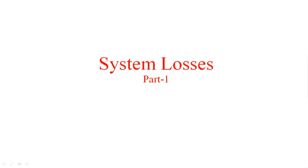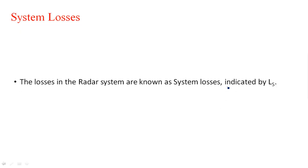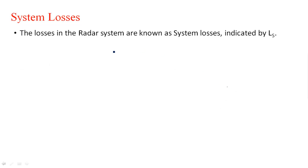In this video, I am going to explain about various losses encountered in the measurement of radar range, or any type of parameter, known as system losses. System losses are nothing but radar system losses — the losses in the radar system are indicated by LS. There are several losses present in the radar system; some may be within the radar system and some may be outside.